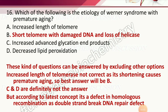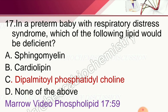Question 16: Etiology of Werner syndrome with premature aging — options are increased length of telomerase, short telomeres with damaged DNA and loss of helicase, increased advanced glycation end products, and decreased lipid peroxidation. The answer is short telomeres with damaged DNA and loss of helicase. Increased telomerase length is not correct — it is shortening that causes premature aging. According to the latest concept, it is a defect in homologous recombination as a double-strand break DNA repair defect.